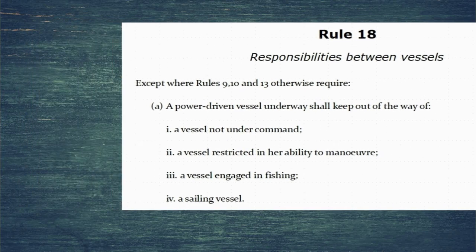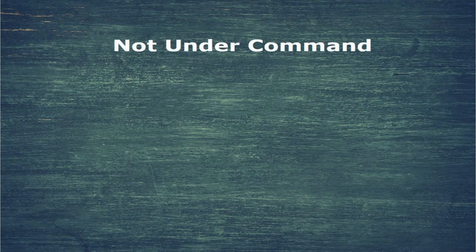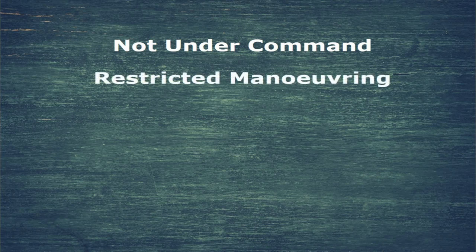So what is this hierarchy? Well, it's kind of common sense really. It places not under command right at the top, along with restricted in ability to manoeuvre. The rule doesn't actually differentiate between the two, but common sense would say not under command is unable to manoeuvre due to some exceptional circumstance, while restricted in ability to manoeuvre is only unable due to the nature of her work.